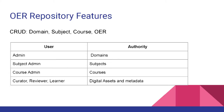Features of the OER repository. There will be basically six types of users: admin, subject admin, course admin, curator, reviewer, and learner. Admin will be responsible for managing domains, subject admin for subjects, course admin for courses. Curator, reviewer, and learner will have access to OERs — means digital assets and metadata. Curator, reviewer, and learner don't have access to courses, only to digital assets and metadata.